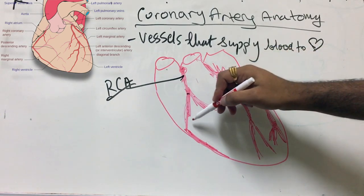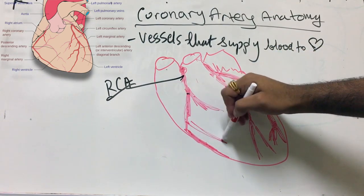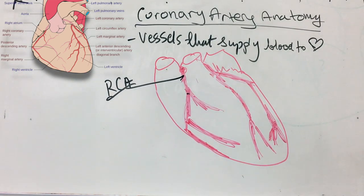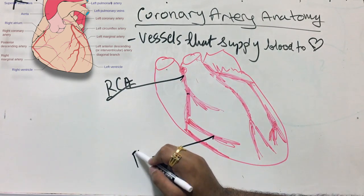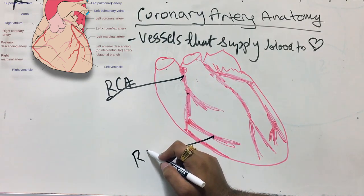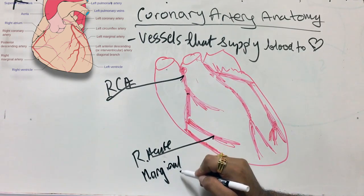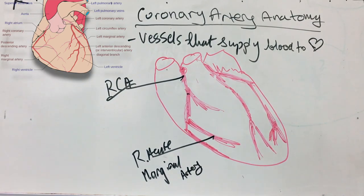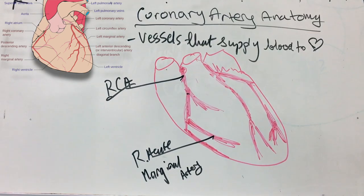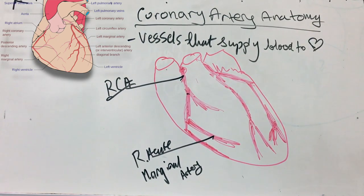This branch is the right acute marginal artery. The right acute marginal artery supplies the right ventricle. That's the right anterior side — there's definitely more that goes on, but this is the right anterior side.